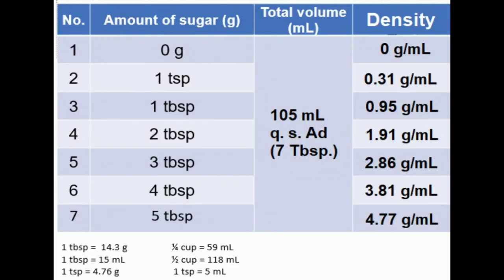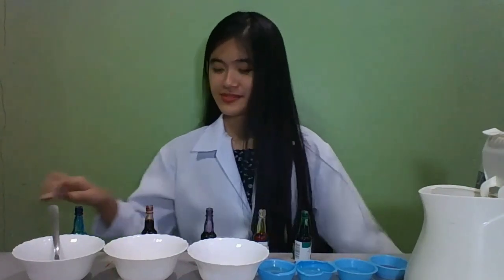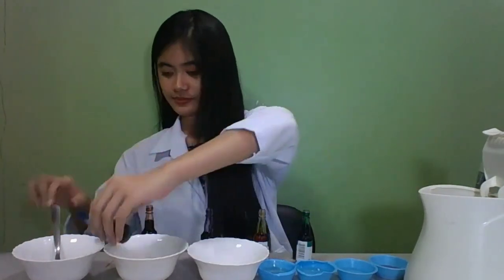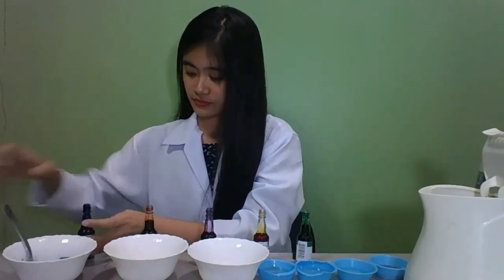After the syrup preparation, let's now proceed with the computation of each syrup's density. Next, we prepare the density column with the prepared syrup that we made earlier. Let us add one drop of coloring material to each syrup and mix them carefully. Let us carefully add the syrup into the clear and transparent glass in descending order.